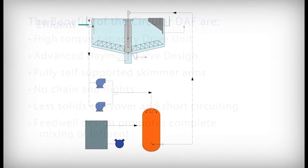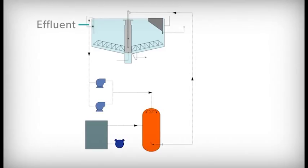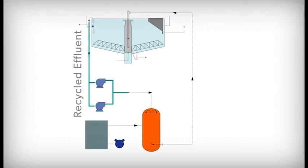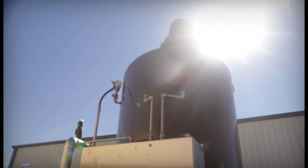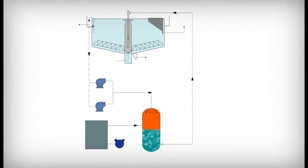A typical DAF system is designed to recirculate a portion of the clarified effluent through a pressurization system by means of a centrifugal recycle pump. The recycled effluent is pumped into an air saturation tank where compressed air is dissolved into the flow under pressure. The air saturated recycle is then fed under pressure to the DAF tank where it thoroughly mixes with the DAF influent flow.